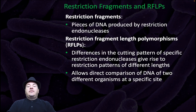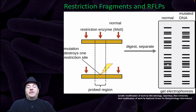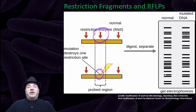Restriction fragments are pieces of DNA produced by restriction endonucleases. Restriction fragment length polymorphisms are differences in the cutting pattern of specific restriction endonucleases that give rise to restriction patterns of different lengths. This allows direct comparison of DNA of two different organisms at a specific site. For example, if we have a normal strand of DNA versus one that's been mutated, the mutation alters the base pairs and results in one of the restriction sites being missing. When the restriction enzyme cuts this DNA and you run it out on a gel, it results in different patterns in one versus the other.